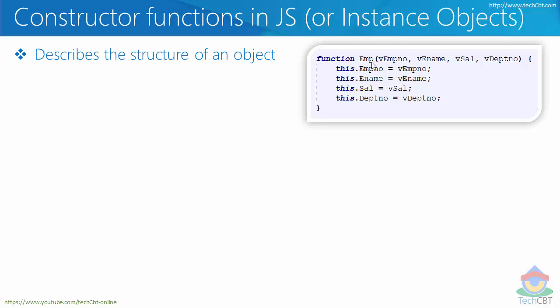Whenever you create a variable based on this data type EMP, you call that an instance or an object of this data type. So instead of simply calling EMP a data type, you can call it a constructor function. A constructor function is very similar to a class in C++, C#, or Java.